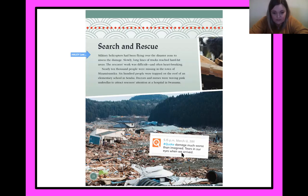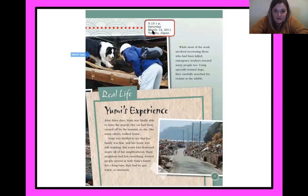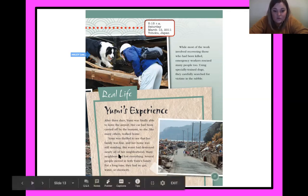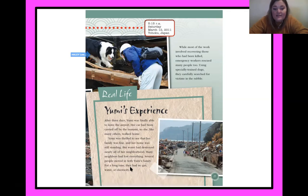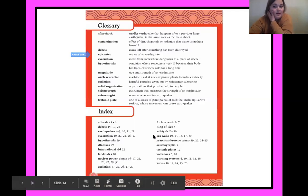A tweet reads: 'Damage much worse than imagined — tears in our eyes when we arrived.' While most of the work involved recovering those who had been killed, emergency workers also rescued many people, using specially trained dogs to search for victims in the rubble. After three days, Yumi was finally able to leave the airport. Her car had been carried off by the tsunami, so she walked home. She was thrilled her family was fine and her home was standing, but water had destroyed nearly all of her neighborhood. Several people moved in with Yumi's family, and for a long time they had no gas, water, or electricity.